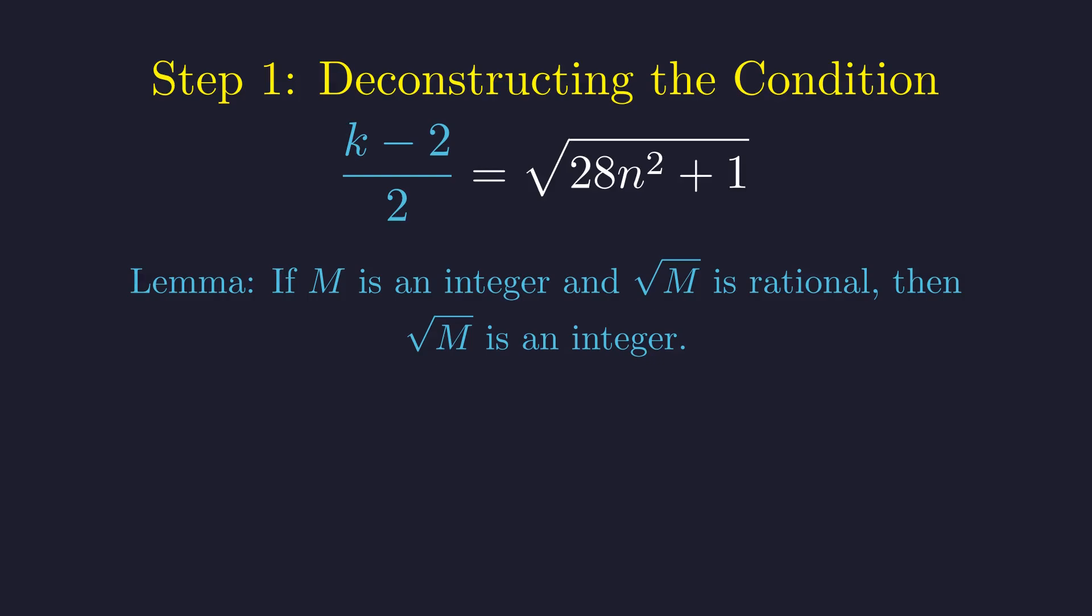This relies on a fundamental lemma of number theory, which we will now prove. If the square root of an integer m is a rational number, it must be an integer.